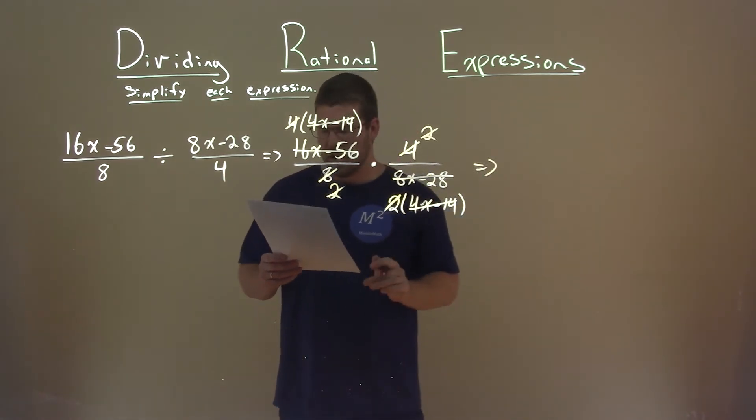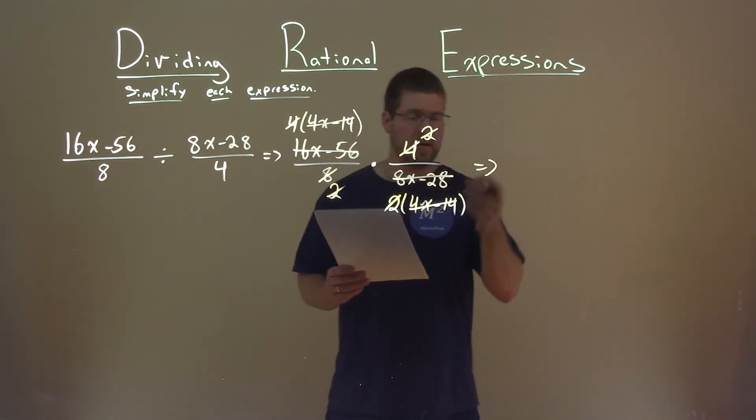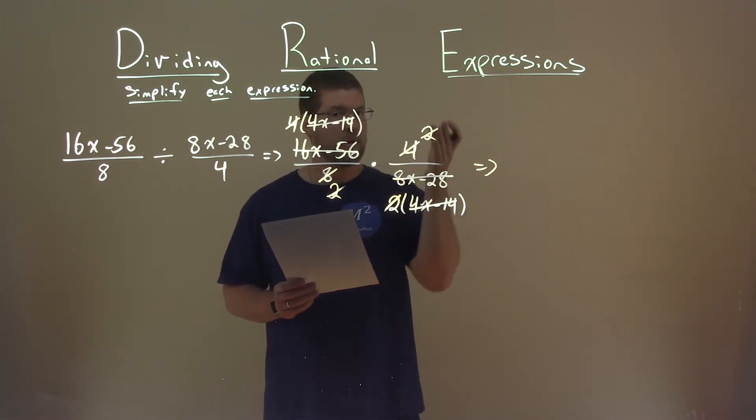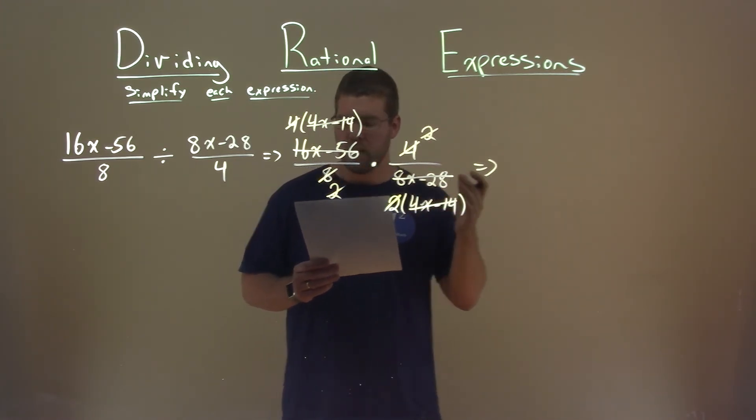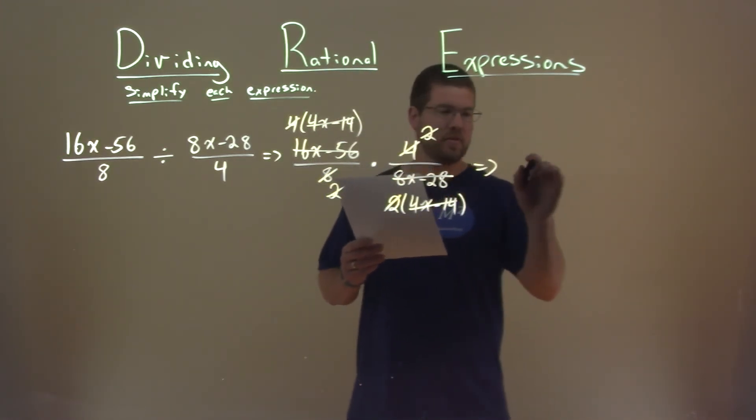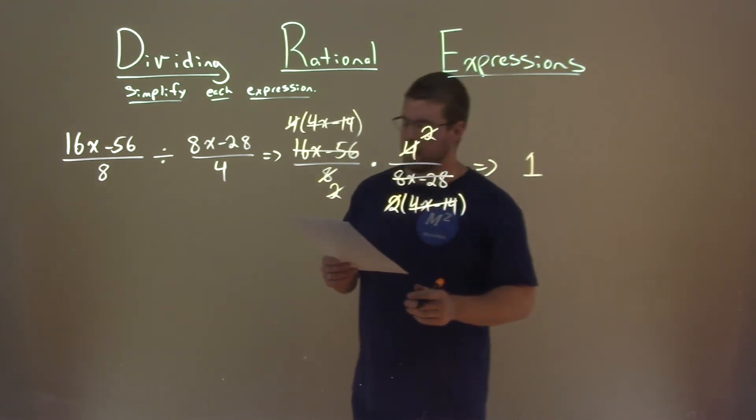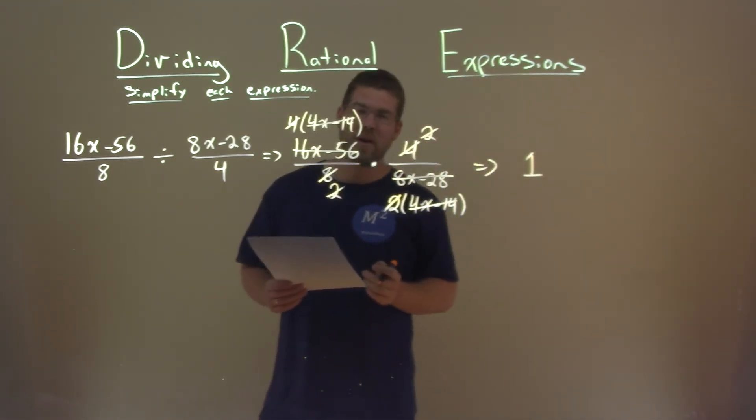So what are we actually left with? You might be thinking 0. That would be incorrect. We have 1 in the numerator and 1 in the denominator. So we're actually left with just 1. Our final answer is, after all that, 1.